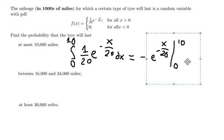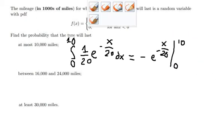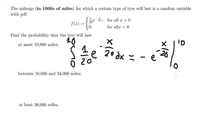We substitute ten and zero into the bounds. This gives us negative e to the power of negative ten over twenty plus negative e to the power of zero, which equals 0.39.